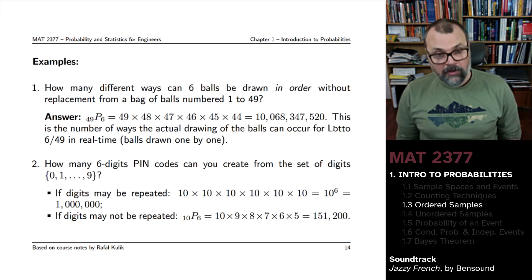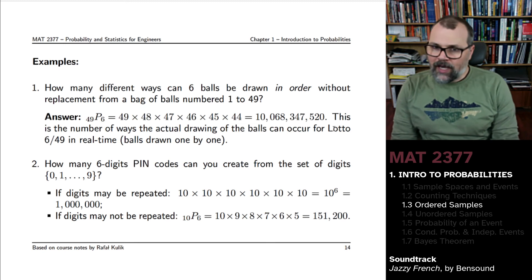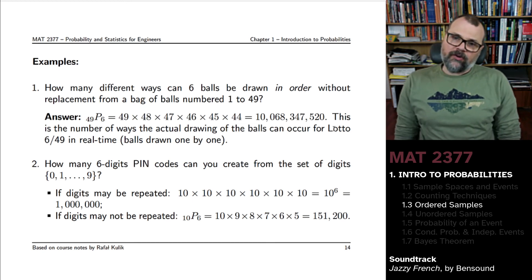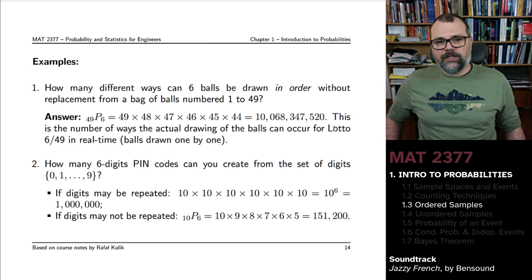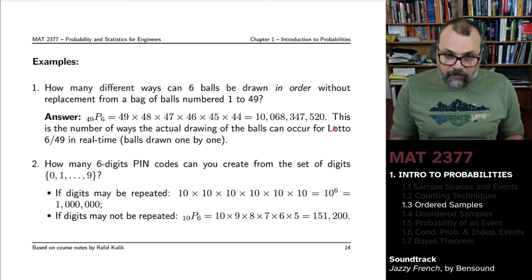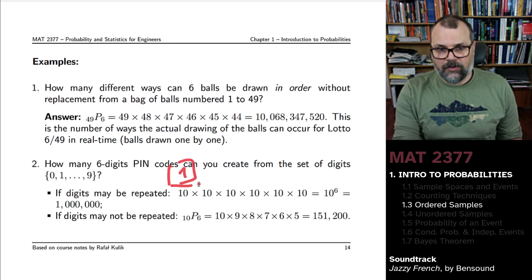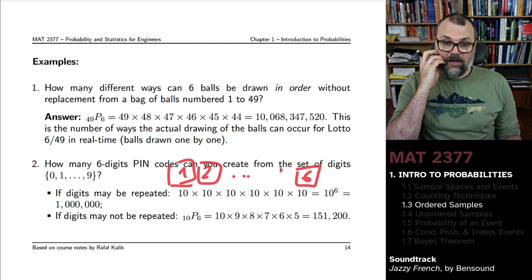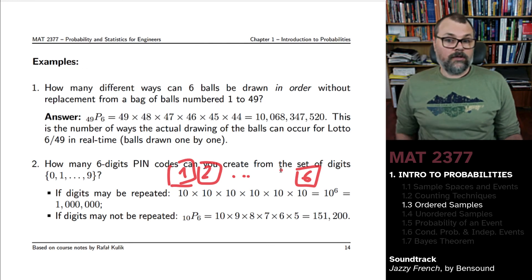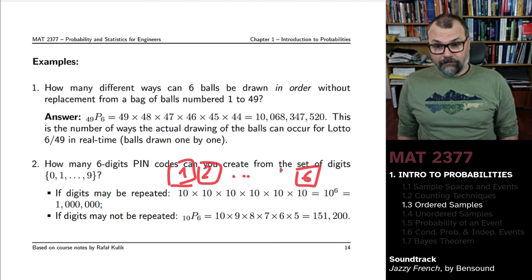Another example, how many six digit PIN codes can you create if you're working from a set of 10 digits? Well, if you can allow digits to be repeated, for the first digit, you have 10 possibilities. For the second digit, you also have 10 possibilities. All the way to the sixth digit, 10 possibilities. And there are one million PIN codes with six digits.